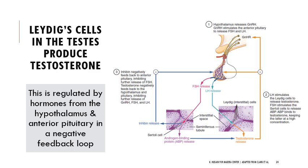The Leydig cells in the testes are important to know — they are what actually produce testosterone. Remember that hormones coming from other parts of the body form bigger feedback loops; hormone production in gonadal tissue is regulated in the brain. There's a big feedback loop between the brain — specifically the hypothalamus and anterior/posterior pituitary — and the testes.